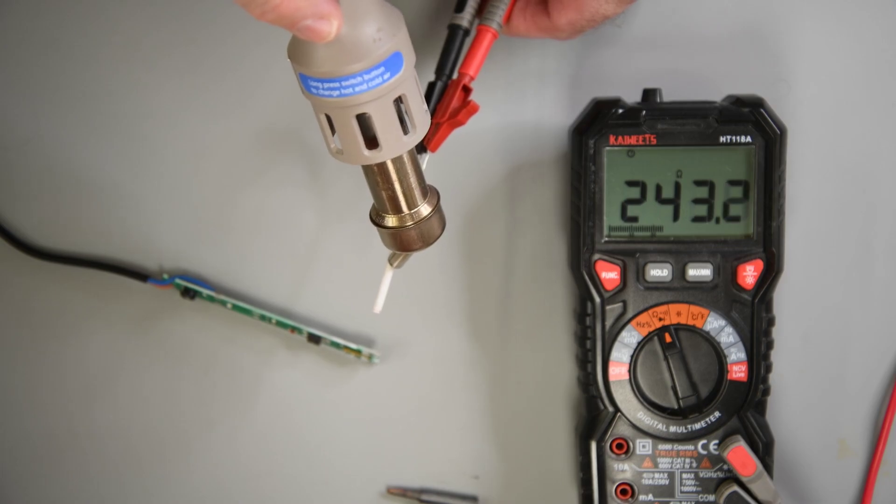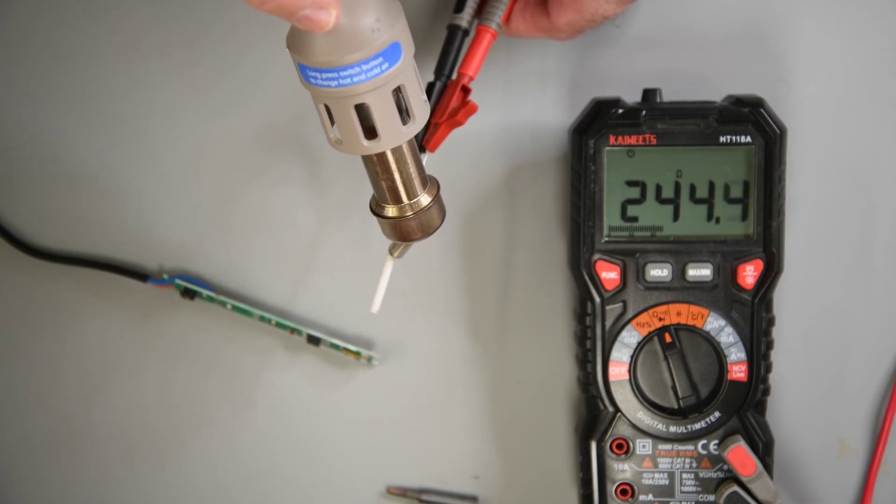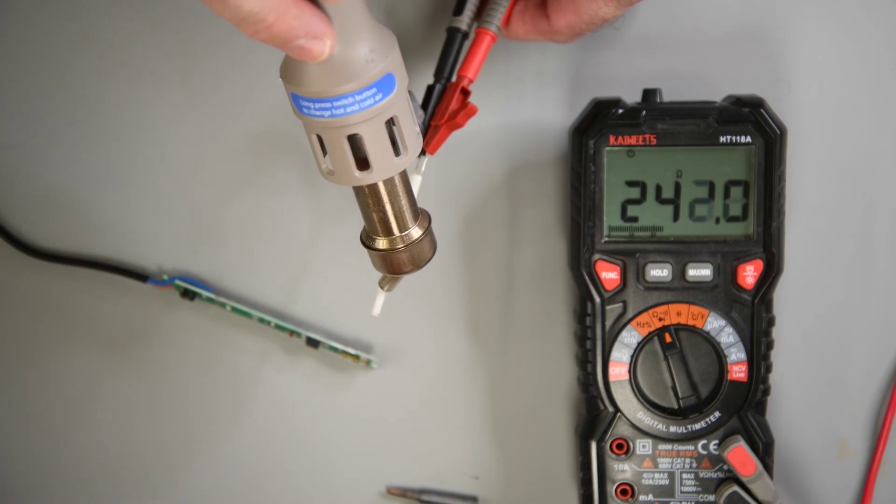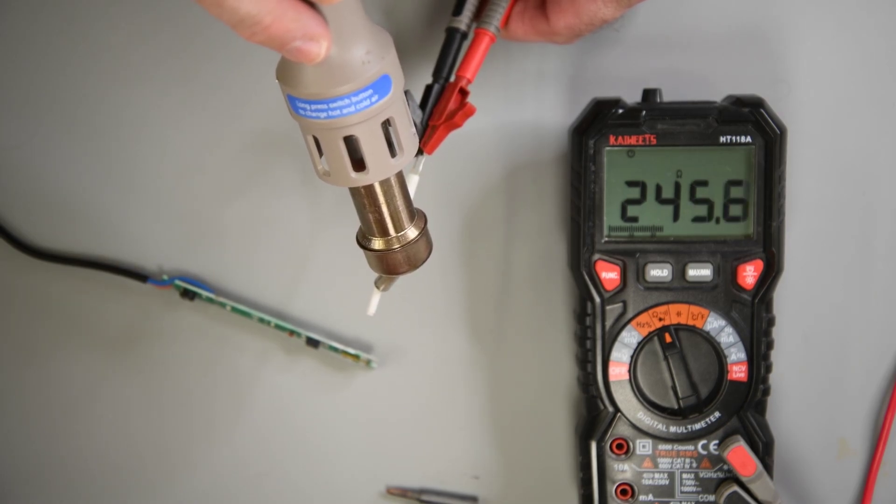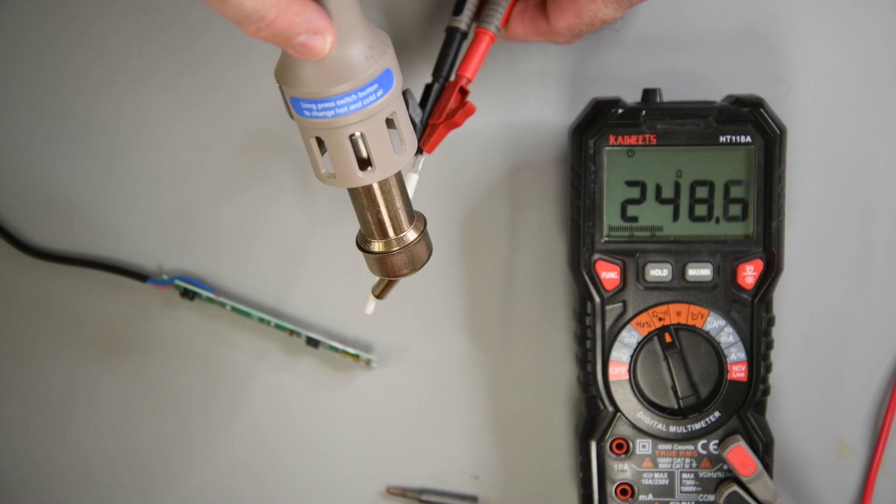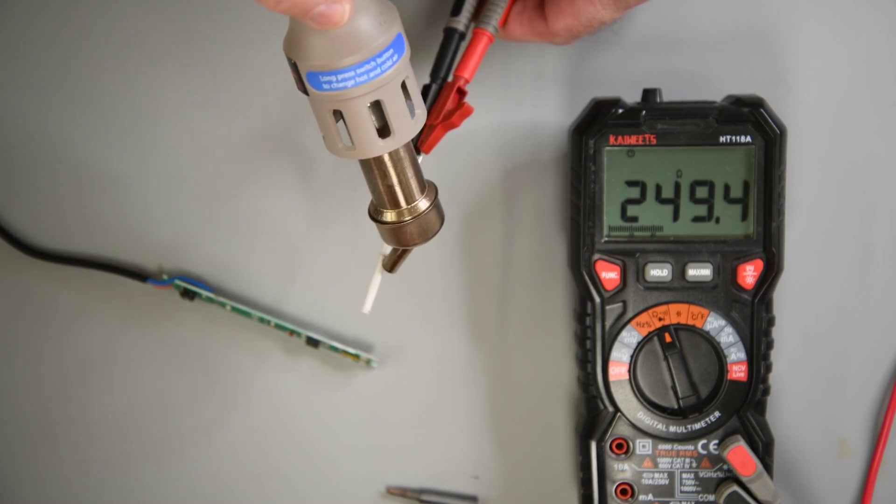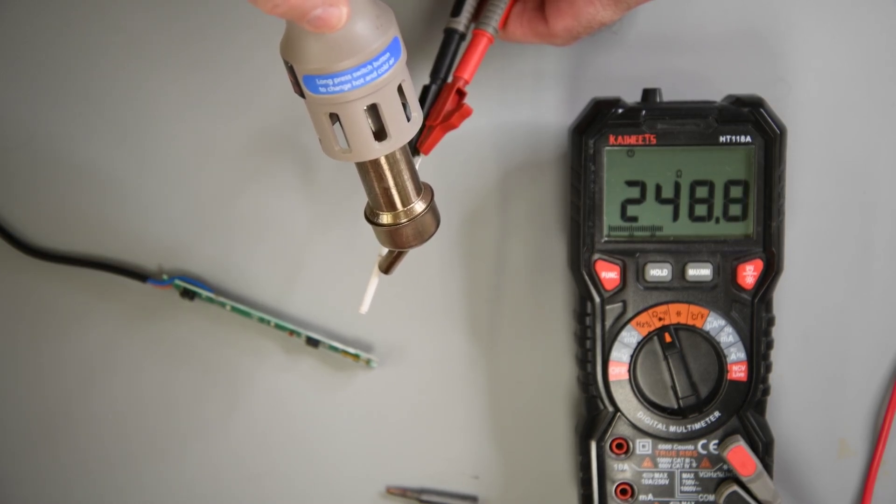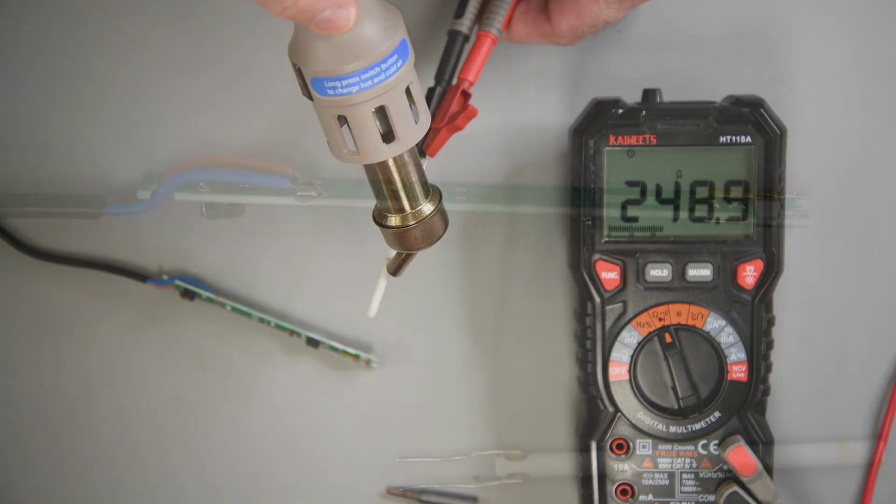When the iron is cold, it pulls maybe 70, 80 watts. And as it gets hot, it will drop to around 25 watts. And that has to do with the resistance of the heating element increasing as it gets hot. So with a bit of hot air, I see close to 250 ohms. Under power, it will be even higher than that, I'm quite sure.